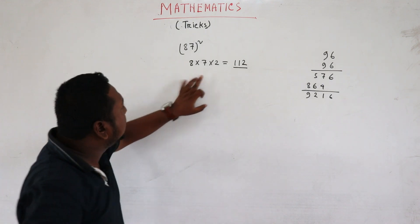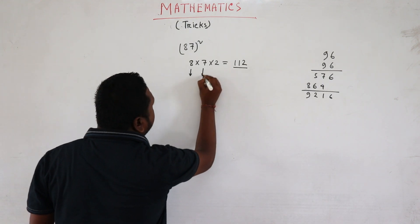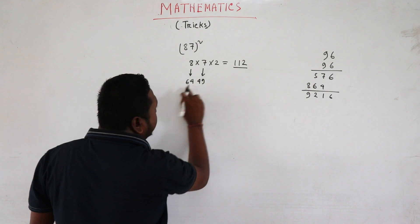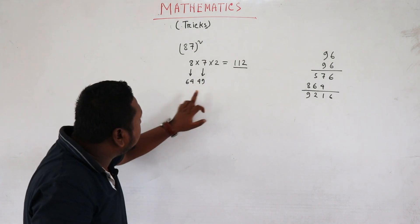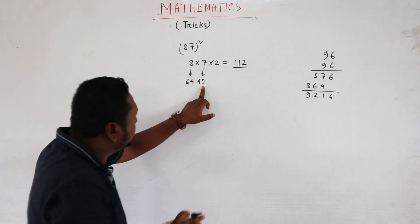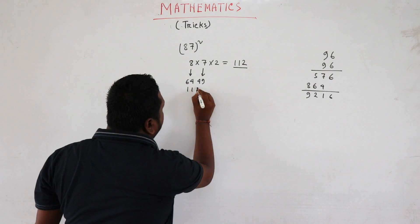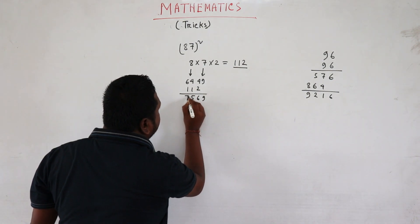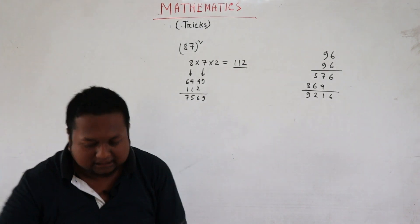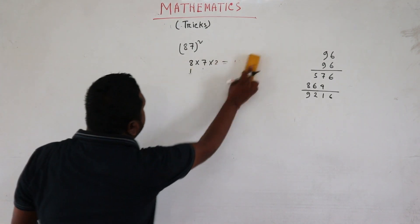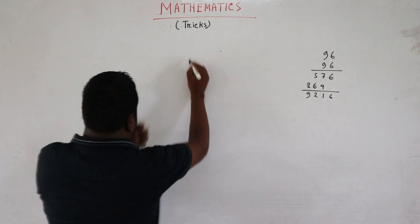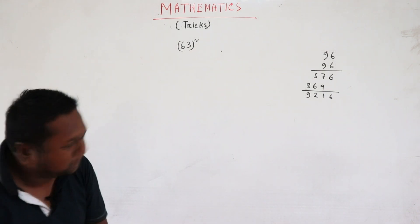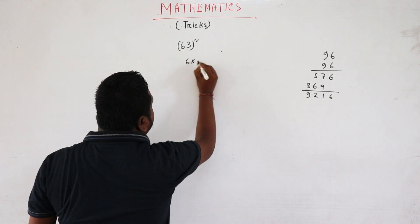Let's have a minimum, so it is 54. 49 and it looks like 86. Answer: holy square, 63, holy square, 63 squared.